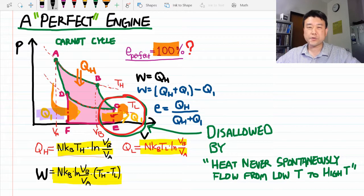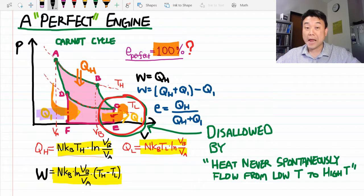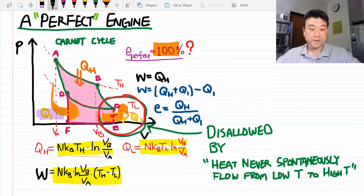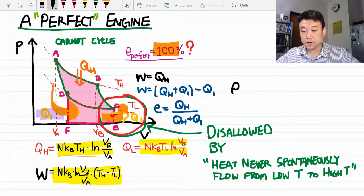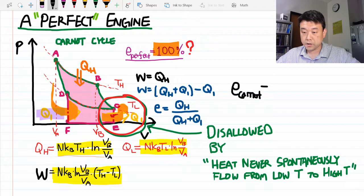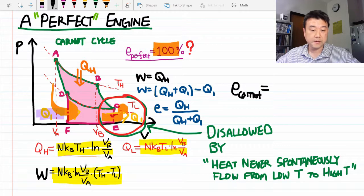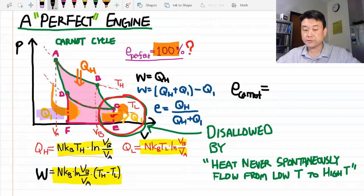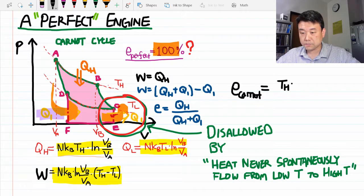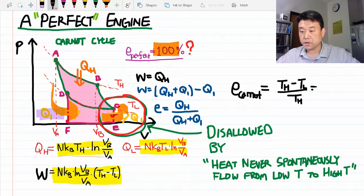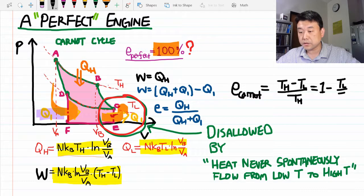Instead, we are going to have to be limited by the efficiency of a perfect engine that's allowed within the laws of thermodynamics. That's the efficiency of the Carnot engine or taking the ratio of the work and the heat input we see there. A lot of numbers cancel out. You get TH minus TL over TH or equal to 1 minus TL over TH.